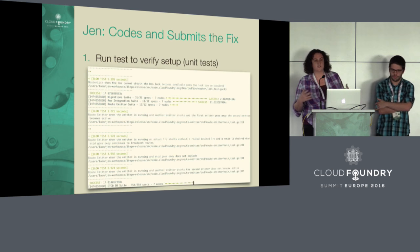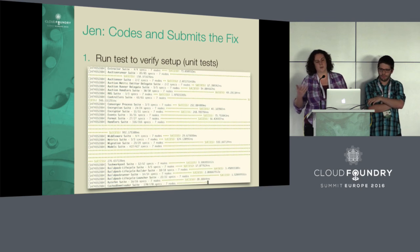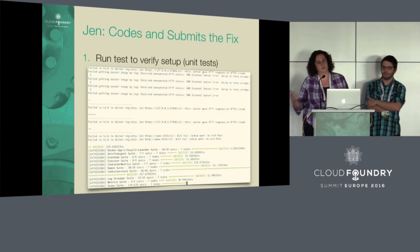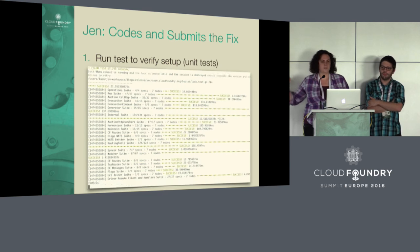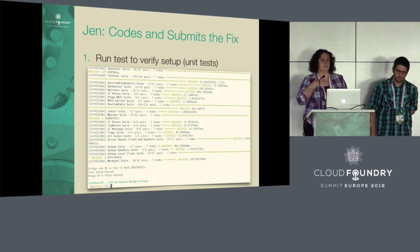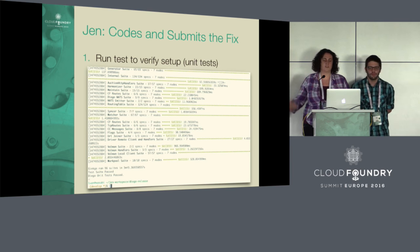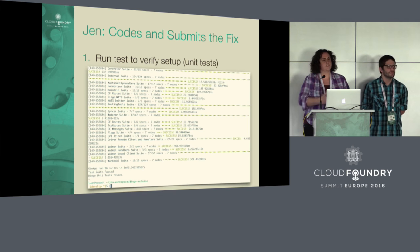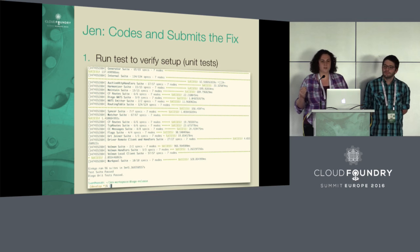Our Bosh Lite is up and running. We could verify it's working correctly by doing a simple CF push and making sure it's using Diego. We also have a big suite of unit tests. Before I even start coding, I want to make sure my environment is clean and everything is working. Our unit tests run directly on the host development machine — in this case, a Mac. They're pretty well isolated and run quickly.